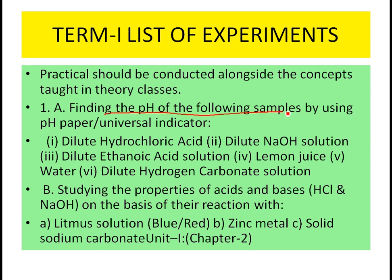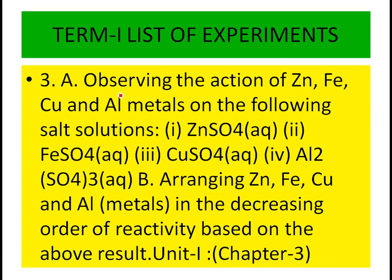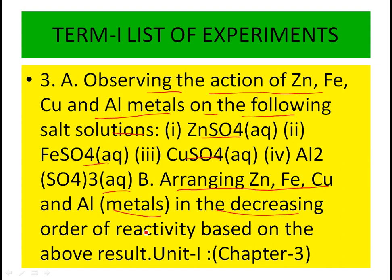For term first, the list of experiments: first, finding the pH of given samples. Second, studying the properties of acids and bases and performing and observing reactions, classifying them into combination, decomposition, displacement, and double displacement reactions. Third, observing the action of zinc, iron, copper, and aluminium metals on salt solutions — zinc sulfate, iron sulfate, copper sulfate, aluminium sulfate — and arranging them in decreasing order of reactivity.